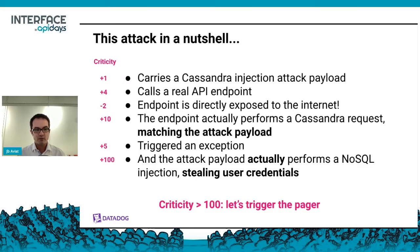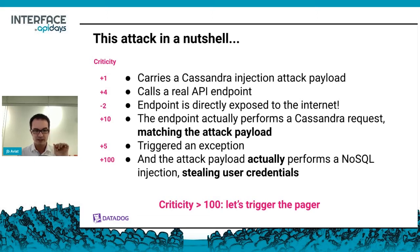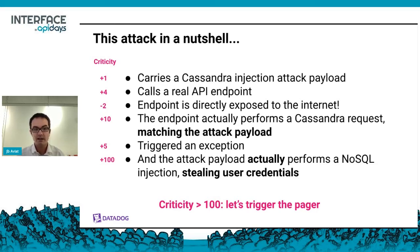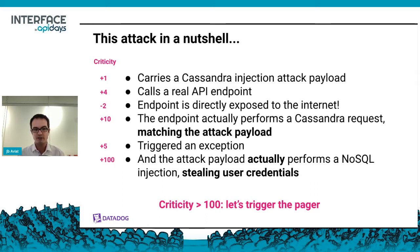In a nutshell: a Cassandra injection attack payload — okay, it calls a real API endpoint, that's interesting. This endpoint is directly exposed to the internet, so it sees hundreds of thousands of attacks per minute — we might not care. But this endpoint actually performs a Cassandra request matching the attack payload, and it triggered an exception. Last but not least, we discovered this attack actually performs a NoSQL injection stealing user credentials. So that's very high criticality — here we know we want to trigger a pager.